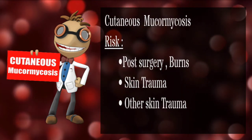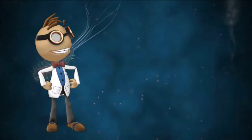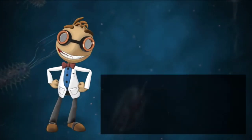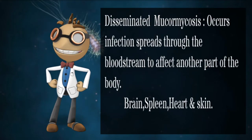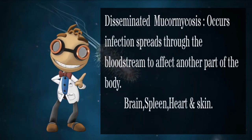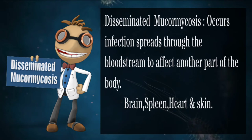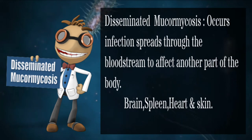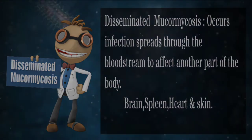Cutaneous or skin mucormycosis occurs after the fungi enter the body through a break in the skin, for example after surgery, a burn, or other type of skin trauma. Disseminated mucormycosis occurs when the infection spreads through the bloodstream to affect other parts of the body, including the brain, spleen, heart, and skin.